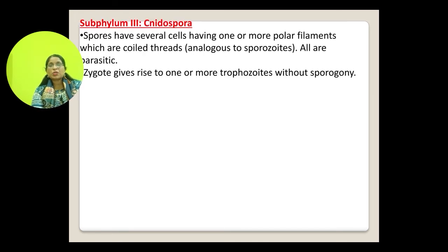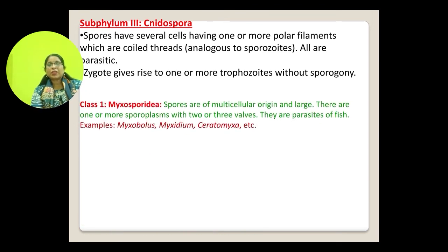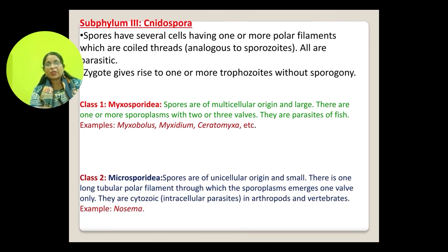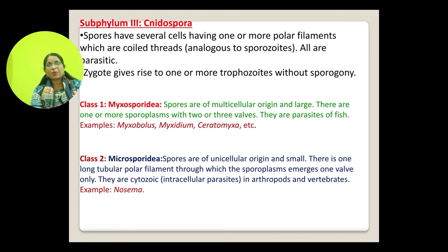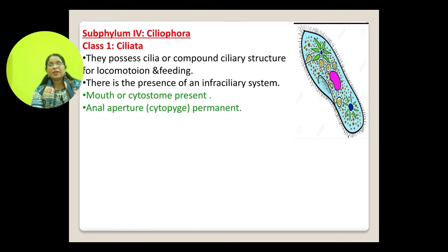In Subphylum Nidospora, spores have several cells with one or more polar filaments which are coiled threads, and all are parasitic. The zygote gives rise to one or more trophozoites without sporogony. It has two classes: Myxosporidae, where spores are of multicellular origin and large, and Microsporidae, where spores are of unicellular origin and small.